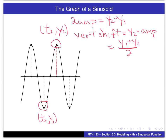The other thing that the high point and the low point get us is information about the period. In particular, we know that one half the period is basically going to be the horizontal distance from a high point to a low point. So the way I've got this labeled, this will be T2 minus T1. We can use that to determine the period and, from that, determine the coefficient B in our equation.